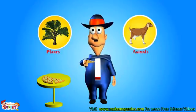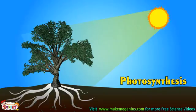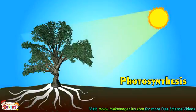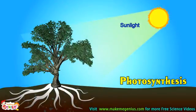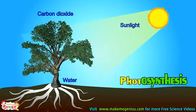We humans get all our food from animals and plants. Let me tell you more about food. Plants are the only living species who make their own food. They use sunlight, carbon dioxide from air, and water from soil to make their food. This process is called photosynthesis.